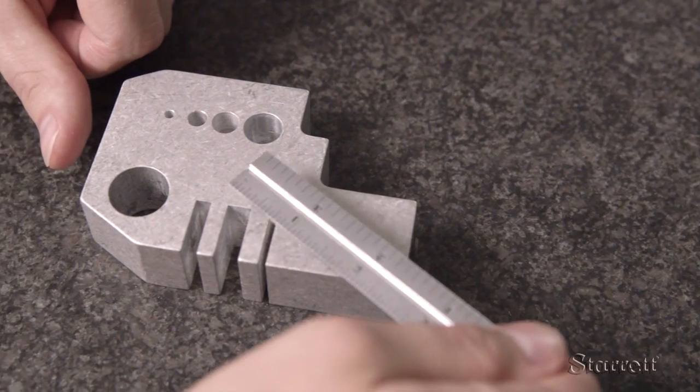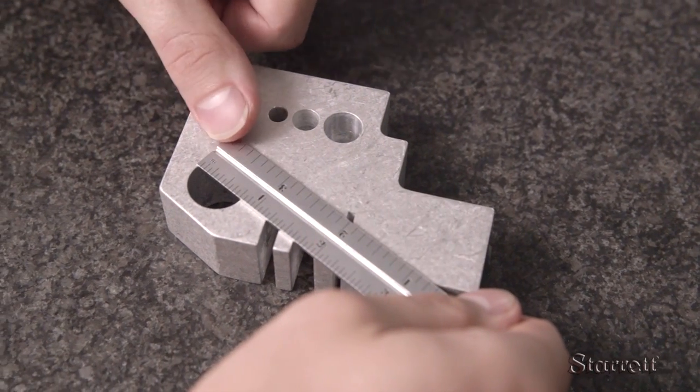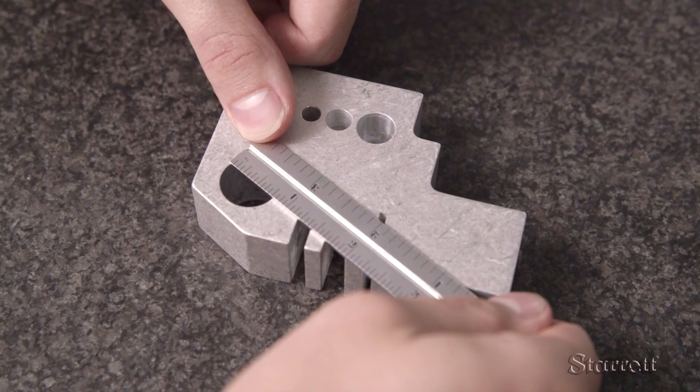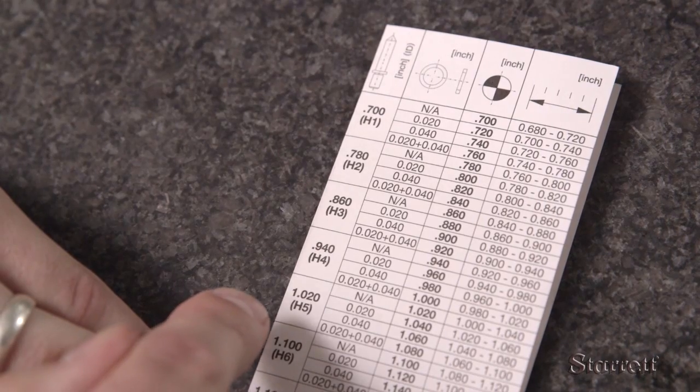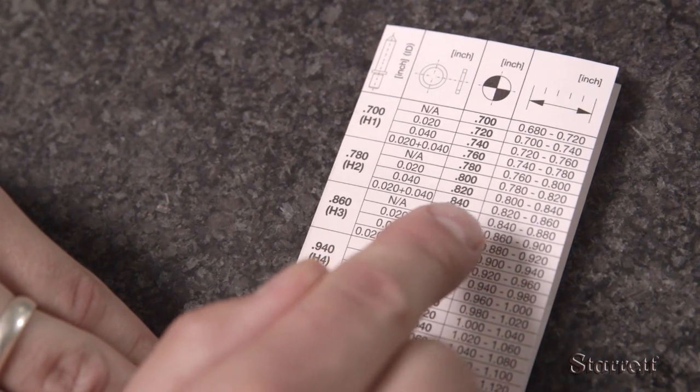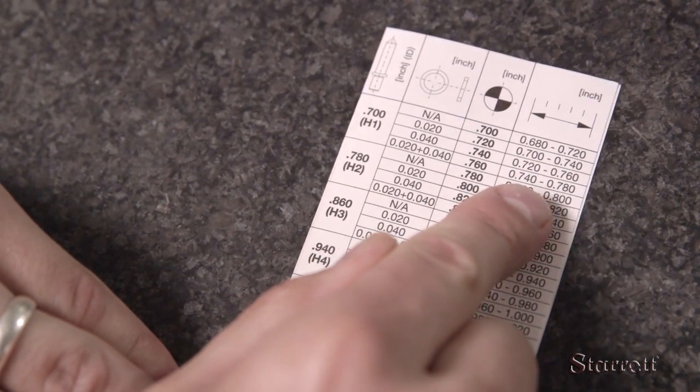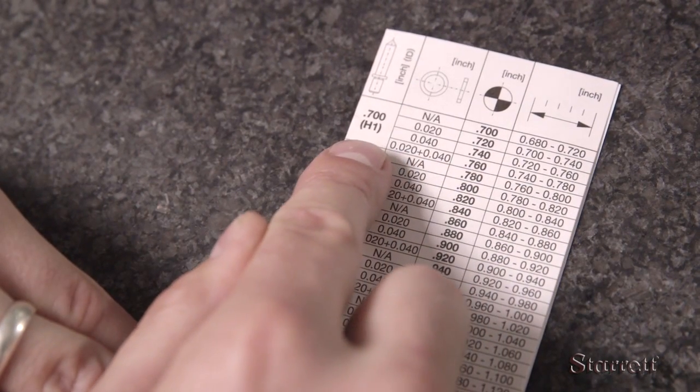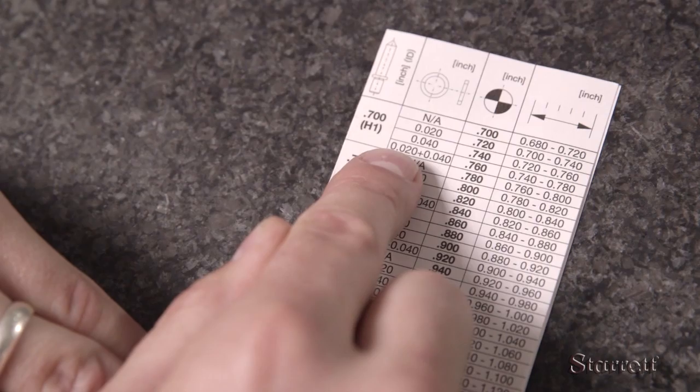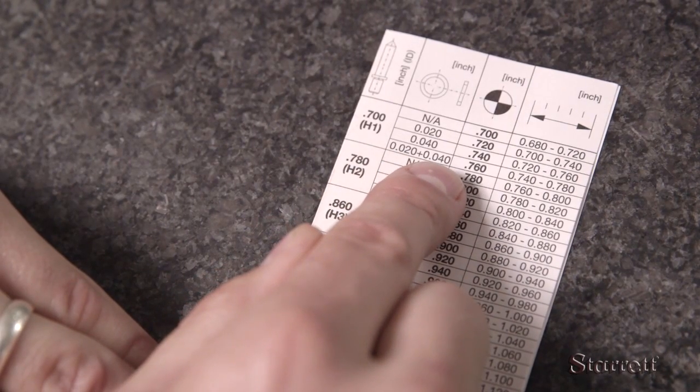This part has a bore with a specified size of 0.750 inches with a tolerance of plus or minus five thousandths. The first step is to select the correct anvil by going to the gauge chart in the user manual. The column on the right lists hole size ranges. The range for our application is 0.740 to 0.780. The chart indicates that we need the 0.7 inch anvil along with the 0.02 and 0.04 inch spacers.